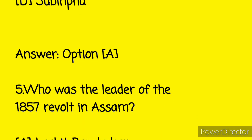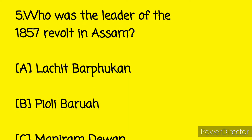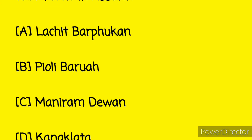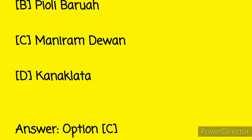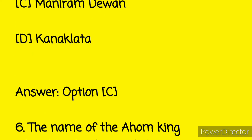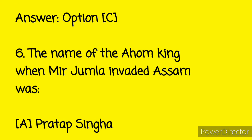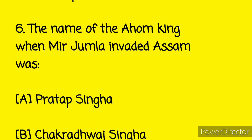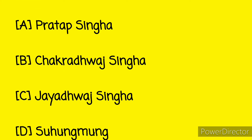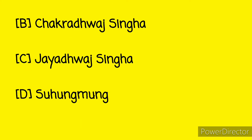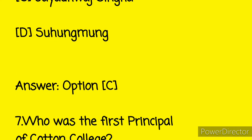Next question: who was the leader of the 1857 revolt in Assam? And here the answer is Option C. The following question's answer is Option C, that is Joy Dosinger.